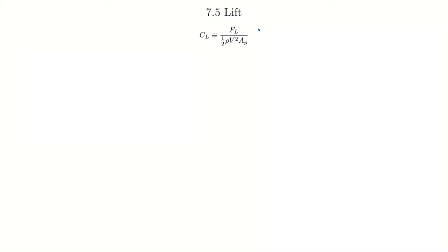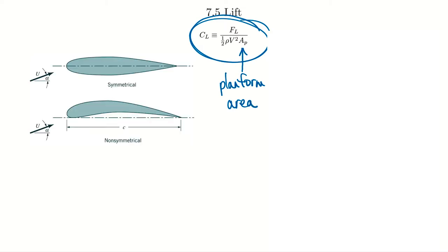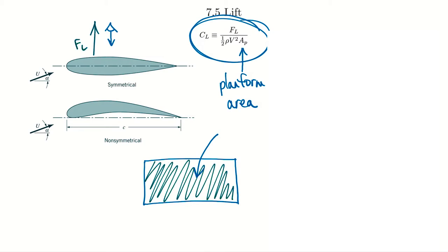Lift follows the exact same pattern as drag. We've got pretty much the same coefficient, except we've got the lift force, and AP is labeled very specifically because it becomes a little bit tricky. This is the planform area, which is the area when you're looking down above a wing. If you're looking down, you'd see the wing basically as a rectangular shape - that right there is the planform area. It's normally the area that's basically normal to the direction of the force.